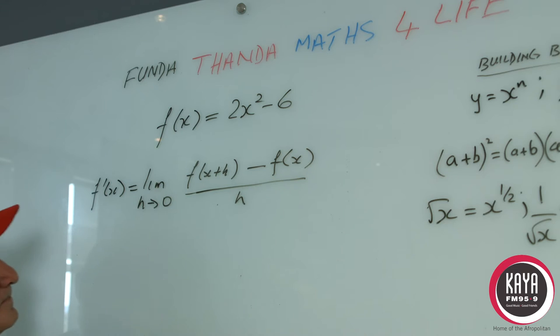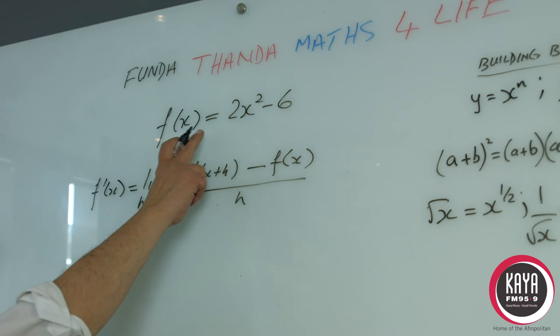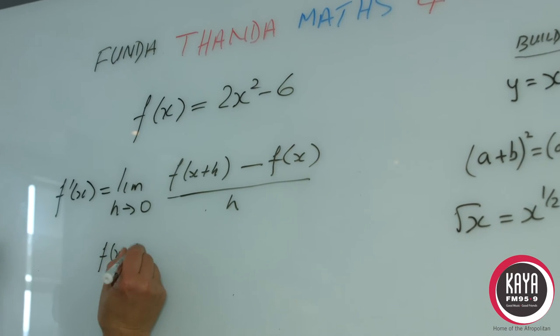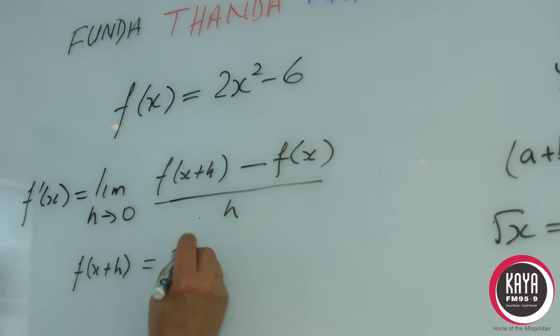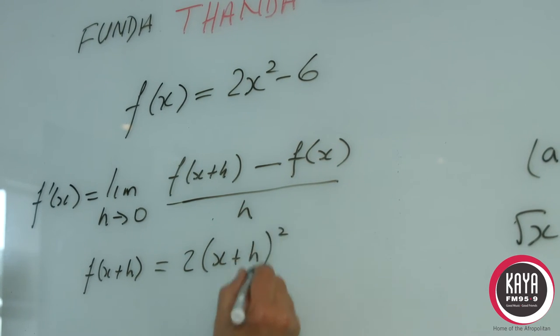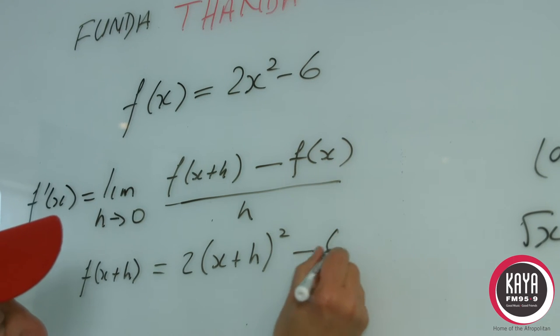So the first thing we'll do is we'll work out f(x + h) which is equal to 2(x + h)² - 6.